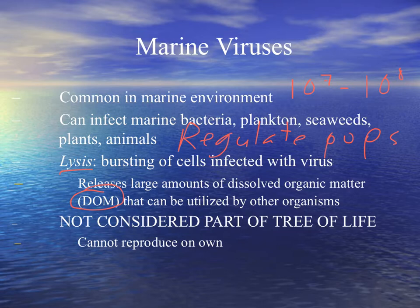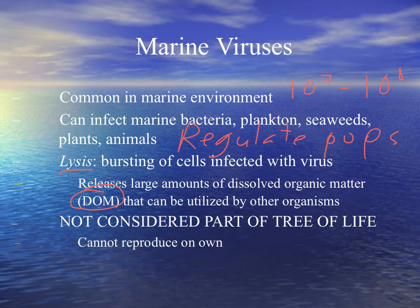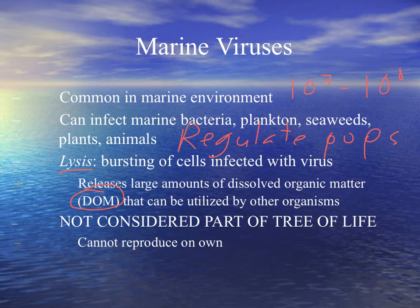Viruses are not actively deciding to release DOM — their goal, if you will, is simply to replicate or reproduce. They do this by infecting a host and bursting the host and releasing more virus. But in the process, they're doing a major ecological service: releasing organic matter to help cycle through the food webs. Even though they're an intricate part of the food webs and the environment they live in, they are not considered part of the tree of life because they don't have all of those different characteristics of life. The main one they're missing is they cannot reproduce on their own. But that doesn't mean they don't have a major role in biology.